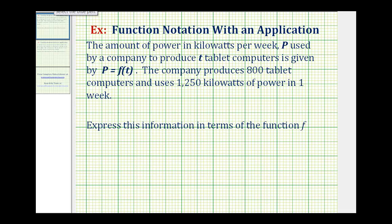Welcome to two examples of how to express information in an application problem using function notation. In our first example, we're given the amount of power in kilowatts per week, big P, used by a company to produce T tablet computers, given by P equals F of T.